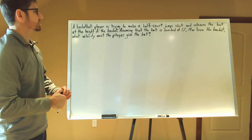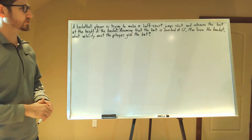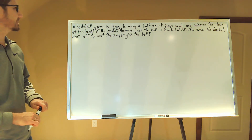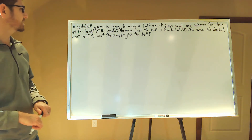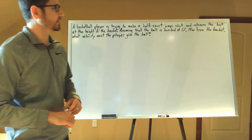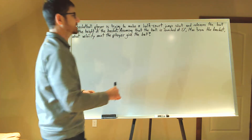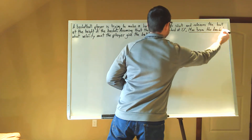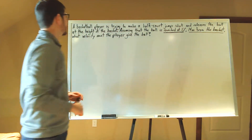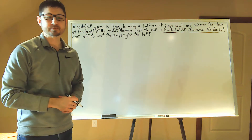A basketball player is trying to make a half-court jump shot and releases the ball at a height of the basket. Assuming that the ball is launched at 51 degrees, 14 meters from the basket, what velocity must the player give the ball?